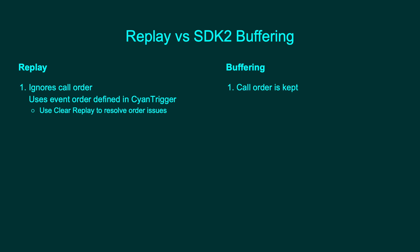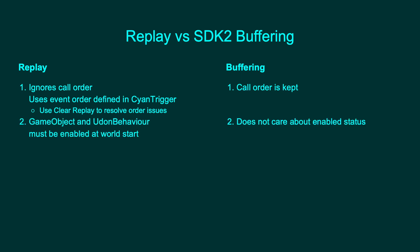The next difference between replay and SDK2 buffering is that the object's enabled state matters. SDK2 doesn't care if the object or VRC trigger is enabled — buffered events will always execute for late joiners, even when the object is disabled at start. For replay to work properly, both the game object and the Udon behavior must be enabled at start. If either are disabled at start, users will not act on the replay data until the object is enabled. This means that if a replay event is fired before the object is enabled, users in the instance will fire the event and also replay it when the object is enabled, over counting it.